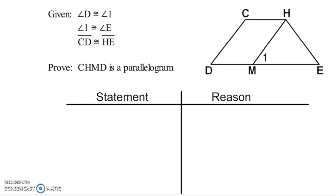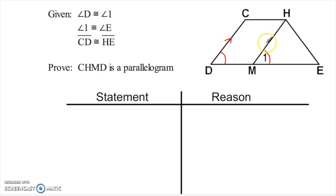Here's the first proof. You can pause the video and copy this down to work along with me, or download the PDF in the comments. Let's start by marking up our picture. They tell us that angle D is congruent to angle 1. Right away I think to myself — that's a pair of corresponding angles. They correspond to lines CD and HM, and if those angles are congruent, that tells me CD is parallel to HM. I've already found something to give me a pair of parallel lines.